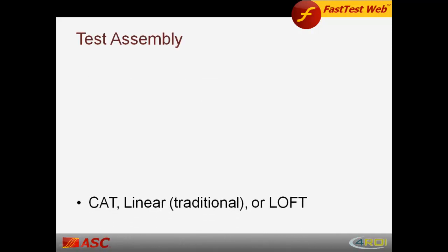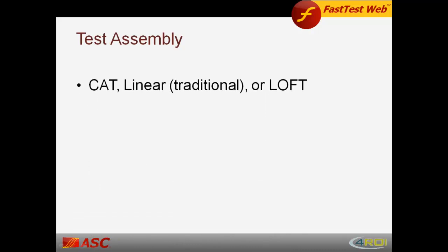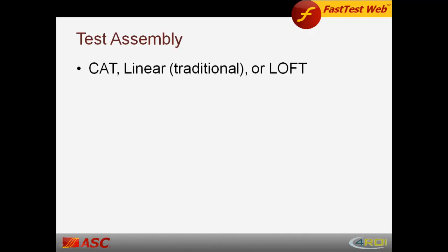Test assembly. Computerized adaptive testing, also known as CAT, is where items are selected one at a time to match item difficulty and candidate ability as close as possible. Utilizing CAT decreases the number of items a candidate will view and answer. Linear or traditional testing is a standard selection of items for a test. LOFT, which is linear on-the-fly testing, is a hybrid between CAT and linear testing where you can select a random pool from your item bank to represent a percentage from each domain for each test taken, creating a unique experience per candidate, thus greatly increasing the integrity and security of your test.